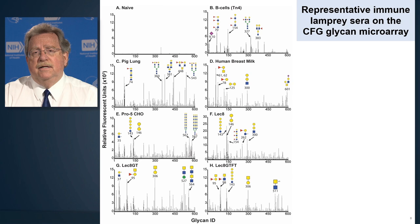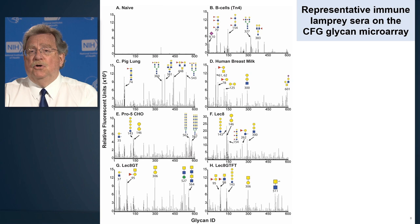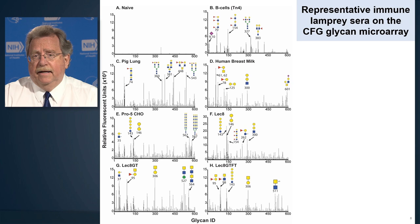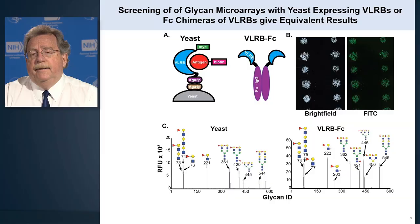We've immunized Lamprey with pig lung homogenates, human breast milk, Pro-5 CHO cells, Lec-8 (a Chinese hamster ovary cell mutant), Lec-8-GT (another mutant making different sugars), and Lec-8-GT-FT (yet another mutant expressing still different sugars). As you can see, all these immunogens induce antibodies in the Lamprey, and the binding pattern on the microarray is different for every immunogen, demonstrating that we've made a large library of antibodies against all those antigens.